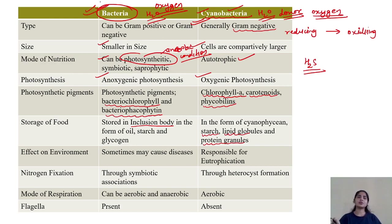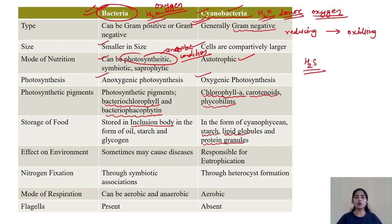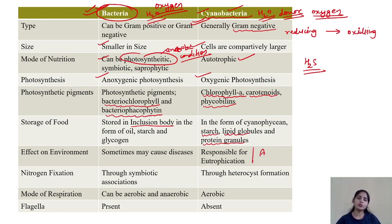Regarding ecological effects: bacteria cause multiple types of bacterial diseases across different species. But when you talk about cyanobacteria, they have effects on the environment. You may have heard the term algal bloom, which is caused by blue-green algae. We call this the eutrophication process.